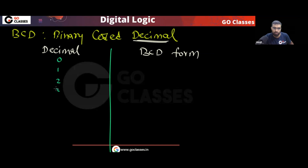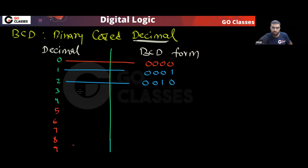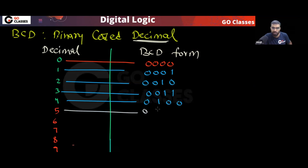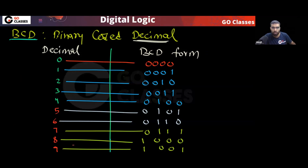For example, these are the decimal digits: 0, 1, 2, 3, 4, 5, 6, 7, 8, 9. Every decimal digit is encoded using binary with 4 bits. So 0 is encoded as 0000, 1 as 0001, 2 as 0010, 3 as 0011, 4 as 0100, 5 as 0101, 6 as 0110, 7 as 0111, 8 as 1000, and 9 as 1001. This is your BCD encoding.